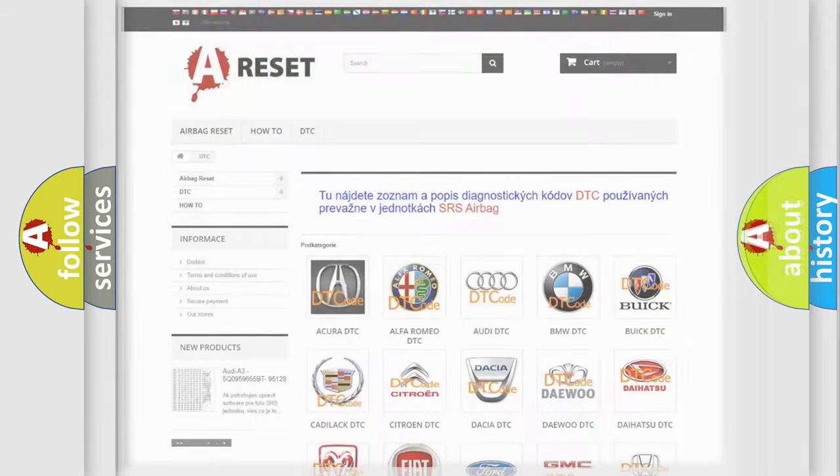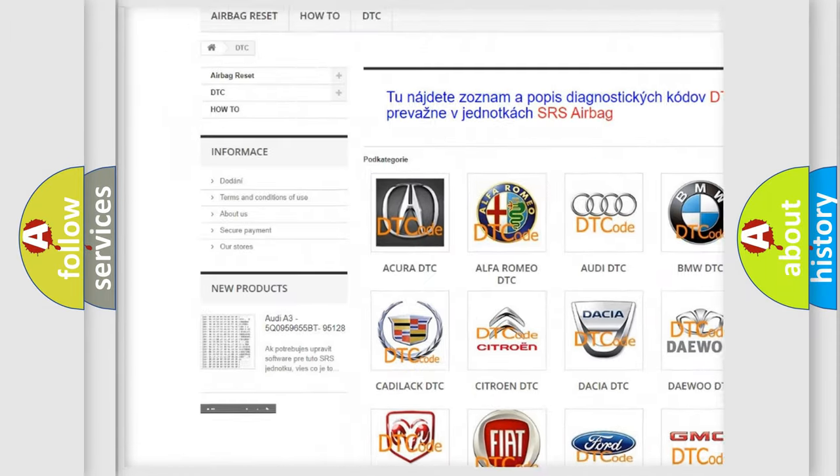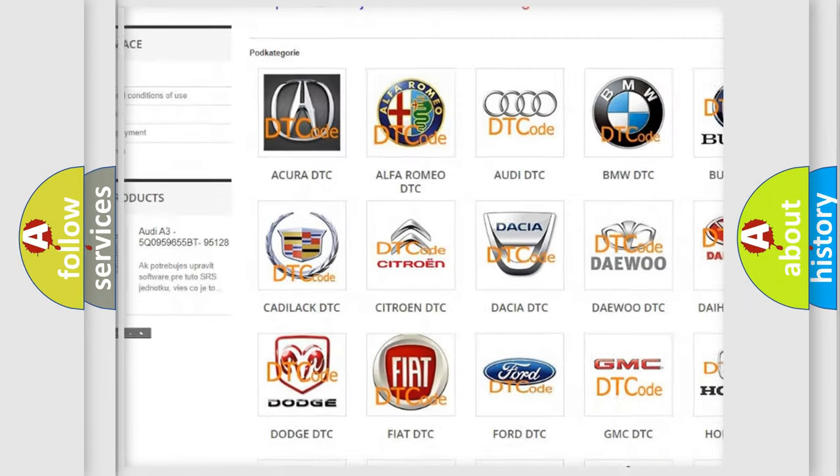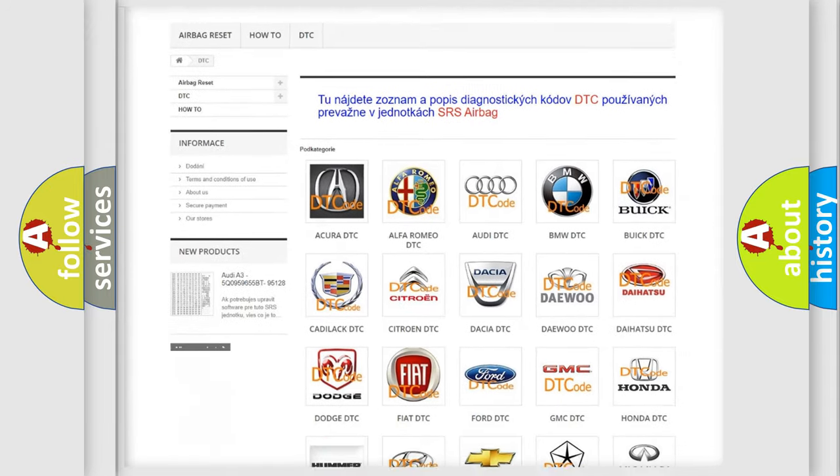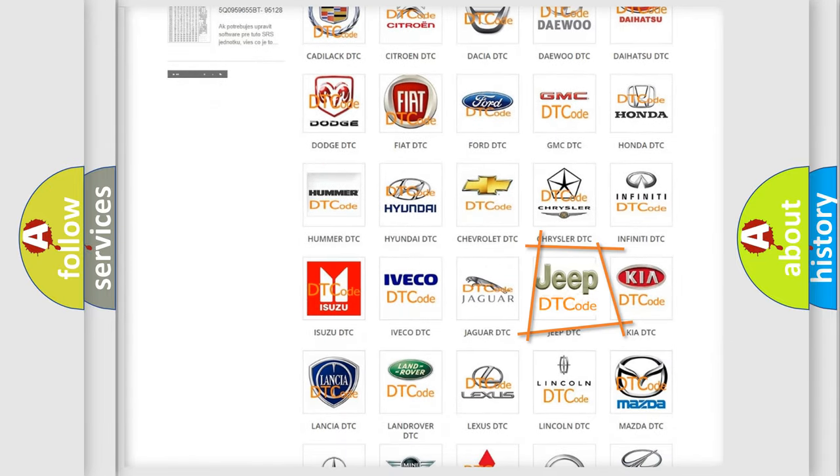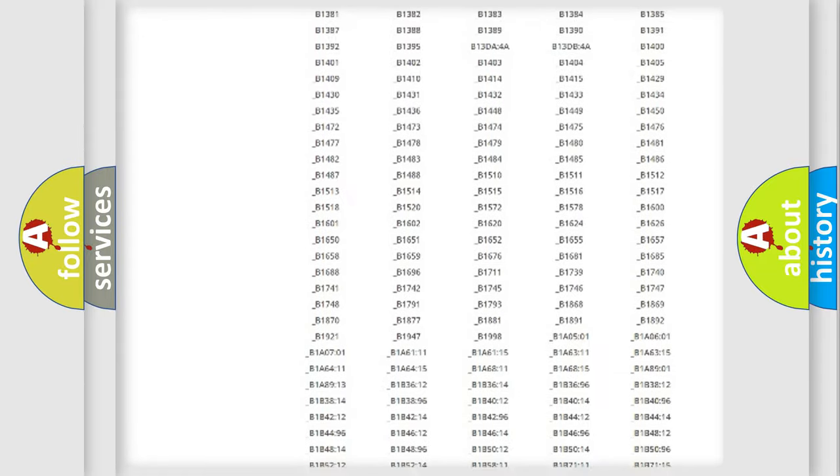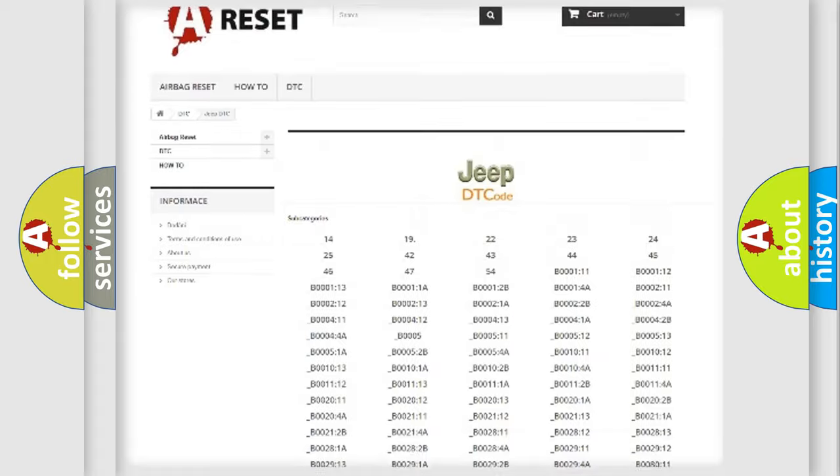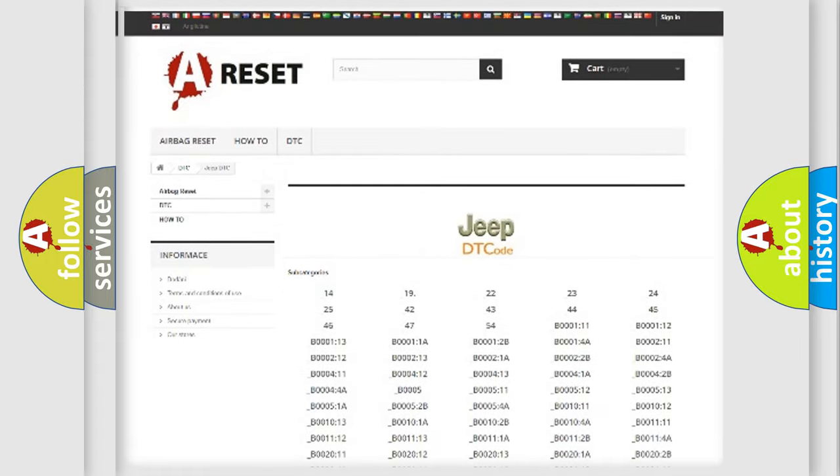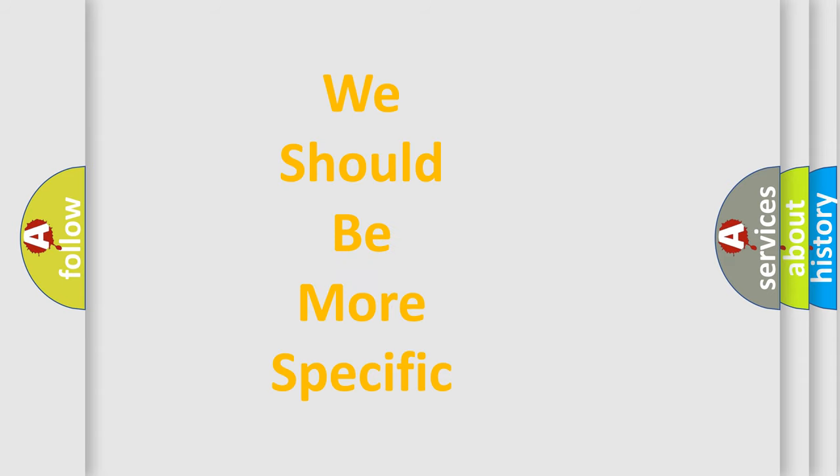Our website airbagreset.sk produces useful videos for you. You do not have to go through the OBD2 protocol anymore to know how to troubleshoot any car breakdown. You will find all the diagnostic codes that can be diagnosed in Jeep vehicles, also many other useful things. The following demonstration will help you look into the world of software for car control units.